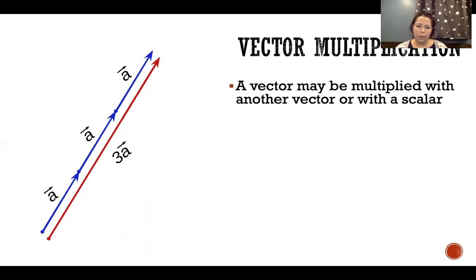A vector may be multiplied with another vector or with a scalar. A scalar is a quantity that has no direction, it's simply just an amount of something.